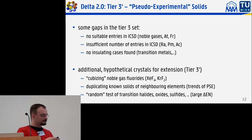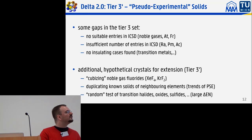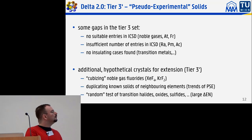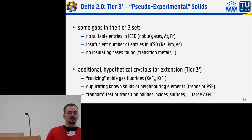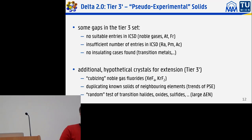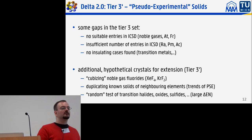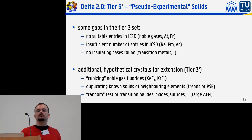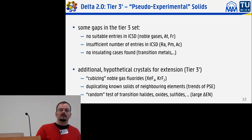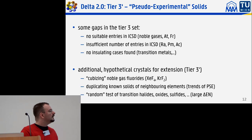For astatine, francium, and radium, we duplicated known solids of neighboring elements, using the trends of the periodic table. For instance, for astatine I constructed a francium astatide compound in the rock salt structure, similar to all other alkali metal halides.